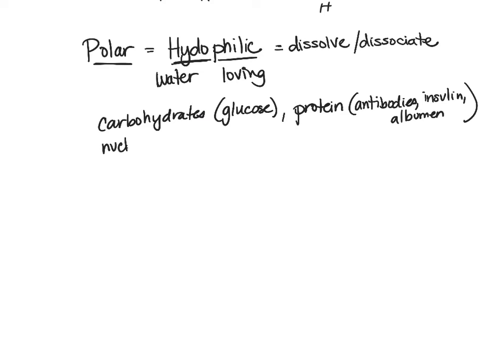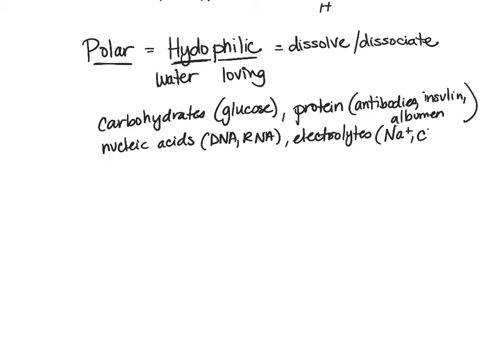Also our nucleic acids — like DNA or RNA — are also polar or hydrophilic. And of course the electrolytes we already talked about, like sodium and chloride, which are important for things like muscle contraction not only in the heart but also in our skeletal muscle, our arms, legs, and so on.